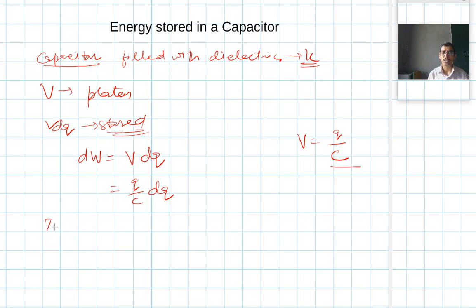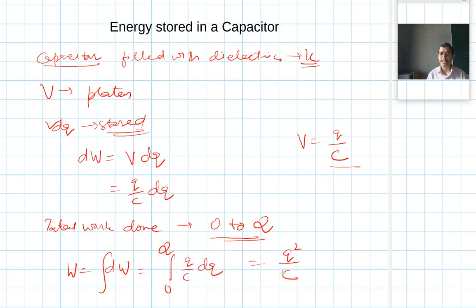Now, let us find out the total work done in storing charge from 0 to Q. This work done can be written as the integral of dW, that is 0 to capital Q of (Q/C) dq. If I find its integral, it is Q²/C with 1/2, and if I take its limits from 0 to capital Q, then I can say that it's Q²/2C.